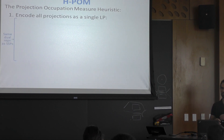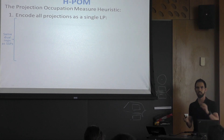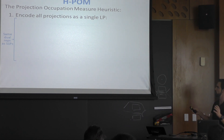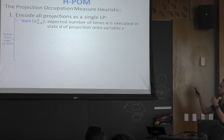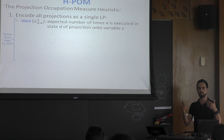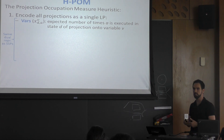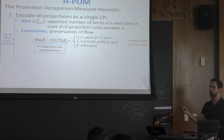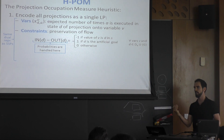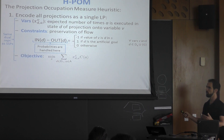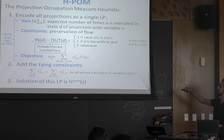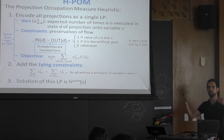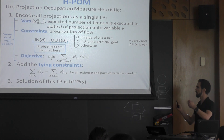We encode H-POM as an LP using the dual representation. Each projection is a little SSP with a straightforward dual representation: variables represent the expected number of times an action is executed at each state. The state is a valuation for each variable. The constraints are flow constraints — all flow into a state must leave, except the initial state (source) and goal state (sink). The objective is to minimize the expected number of action executions times their cost. The tying constraints enforce that the number of expected action executions must be the same across projections.